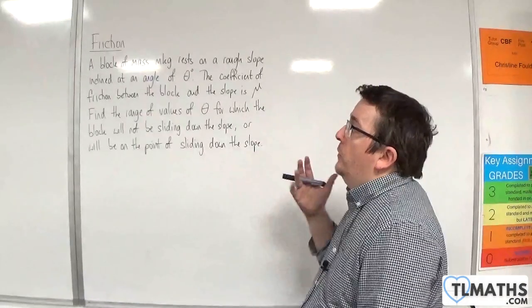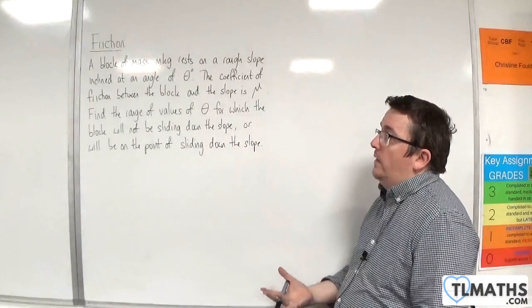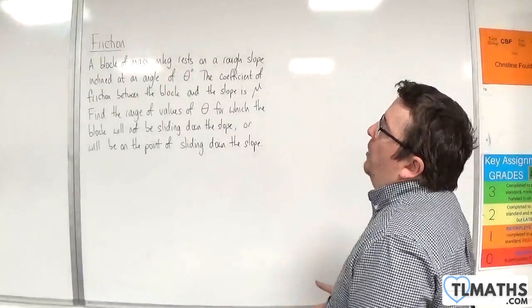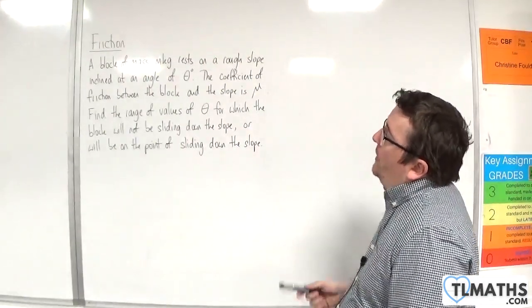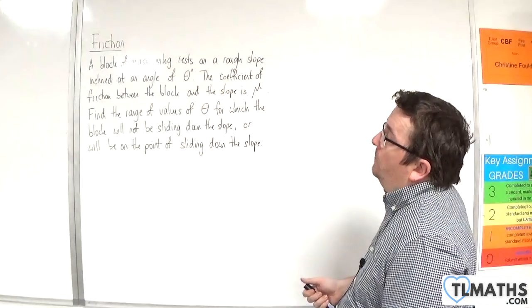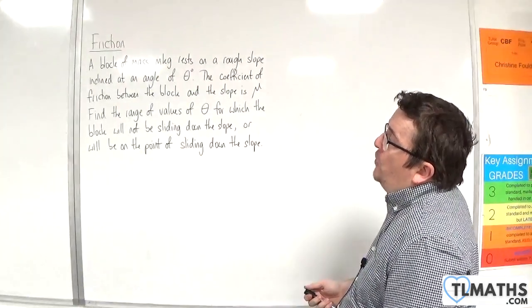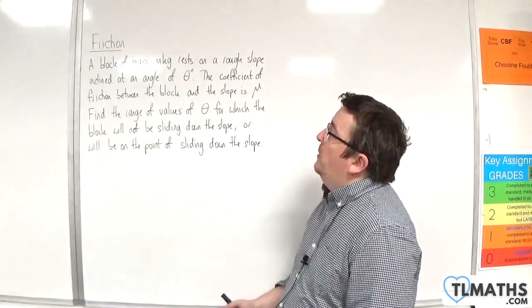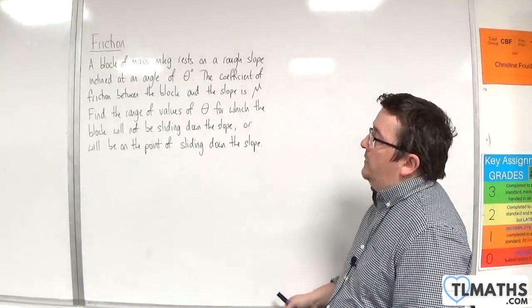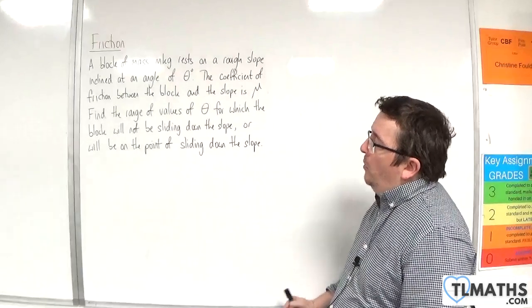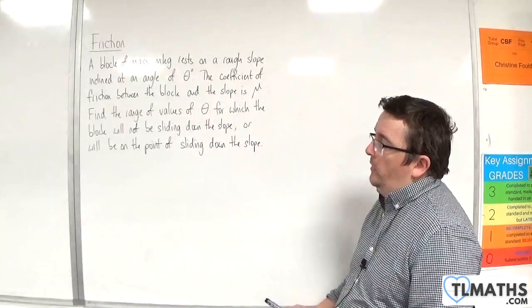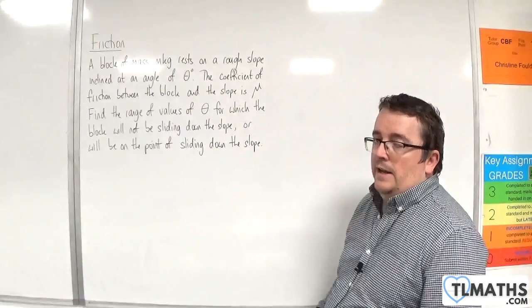In this video, we're going to look at the general case following on from the previous video. A block of mass m kilos rests on a rough slope inclined at an angle of theta degrees. The coefficient of friction between the block and the slope is mu. Find the range of values of theta for which the block will not be sliding down the slope, or will be on the point of sliding down the slope.